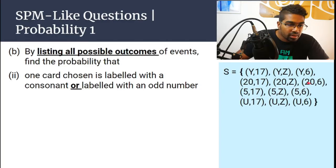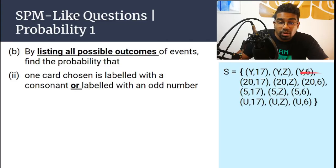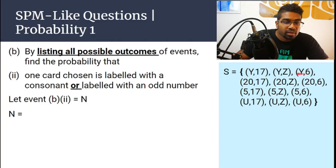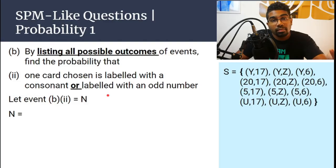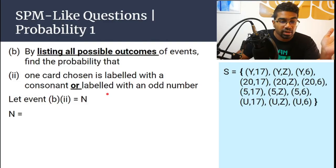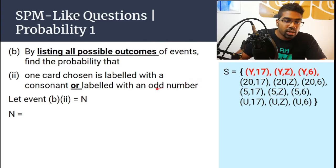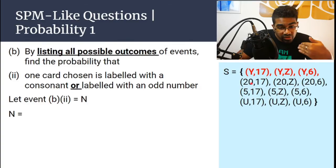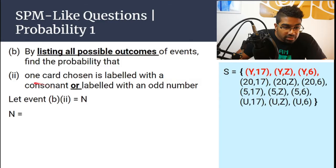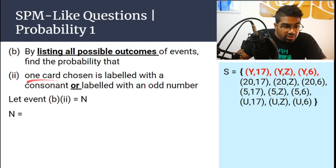Let's look at the sample space again. Y is a consonant, so the moment one condition is satisfied, you can choose already — all outcomes that have Y are definitely included. For 20: 20 is an even number so it's not automatically included. 20,17 — yes, 17 is an odd number, so we can choose this. 20,Z — Z is a consonant, so yes. 20,6 — 20 and 6 are both even numbers and there is no consonant, so we must eliminate 20,6.